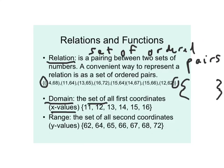Normally with a domain, we list it from least to greatest. And if a value repeats, we only list each value once. Our last definition is the range — the set of all y values. We also list the range from least to greatest and only list each number once. A relation is a set of ordered pairs, the domain is the set of x values, and the range is the set of y values. They're all sets, so they all go inside curly braces — set notation.